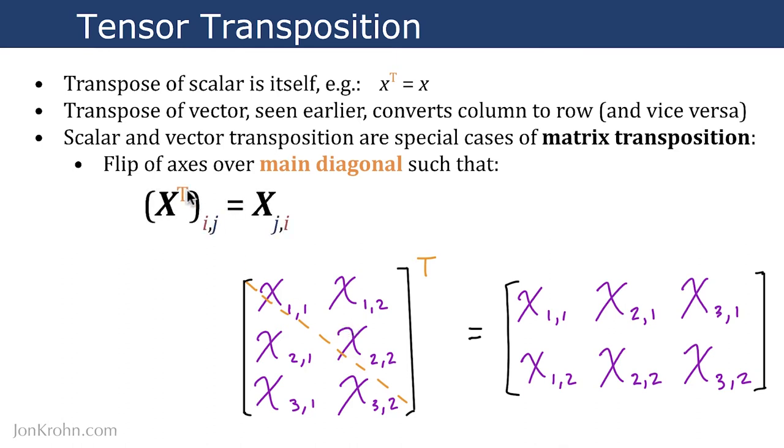In the ith and jth position for the row and column respectively, it simply gets flipped. So all of a sudden, what was column j is now row j, and vice versa.